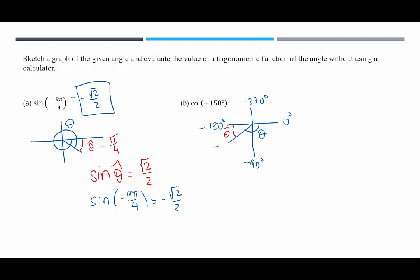This is negative 150 degrees. What's the difference between negative 150 degrees and negative 180 degrees? That would be 30 degrees. So theta hat, our reference angle, is 30 degrees.